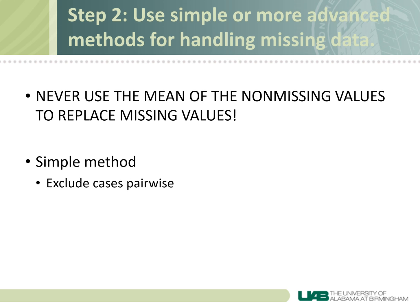The best simple method to use is something called excluding cases pairwise. For some statistical packages this could be set as the default, and in others you'll have to choose it. In this method, it only excludes cases that are missing data required for that specific analysis. So in the home ownership example, if one case was missing age, it would exclude it for that analysis — but for further analysis on some other aspect in that table, it won't exclude that particular case. This is a nice method that will not significantly limit the total amount of data, assuming you don't have a lot of missing data.